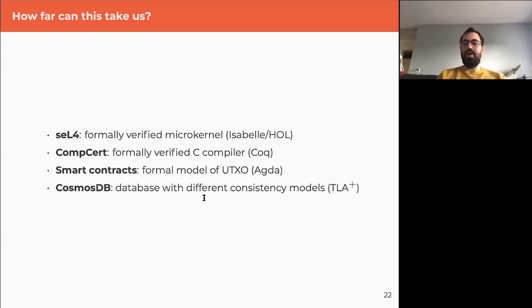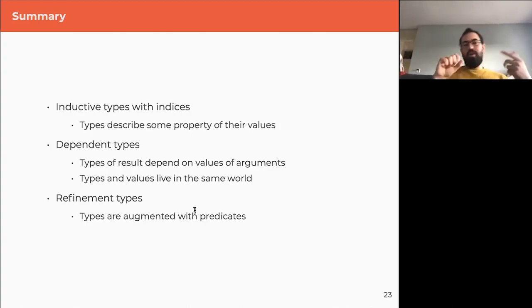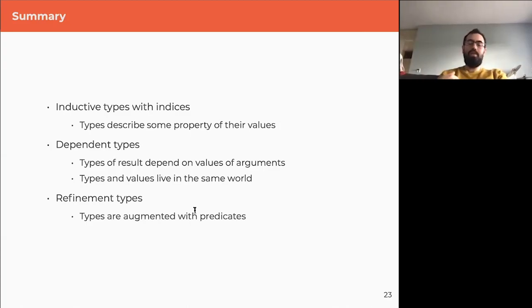In summary, I've shown three approaches to more powerful type systems: inductive types with indices (GADTs in Haskell), where types describe some properties of their values; dependent types, where the type of the result depends on the value of the arguments, implying that types and values live in the same world; and refinement types, which are types augmented by predicates. This is a broad overview of what type-based formal verification looks like today.